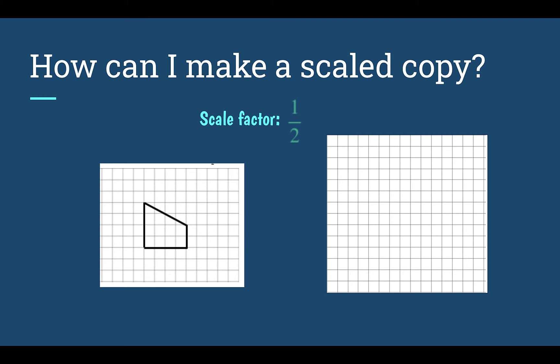Let's look at a different type of scale copy — this one has a scale factor of one-half. When the scale factor was two we multiplied everything by two and it made it larger, it doubled it. Now if we multiply everything by one-half, we are cutting it in half. I'm going to pick my point to start: if my original was four tall, half of that is two squares tall. It was four squares wide but again only half — it was four, now it's two.